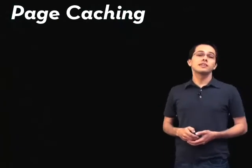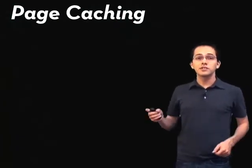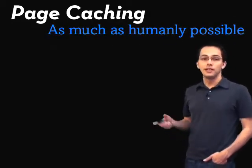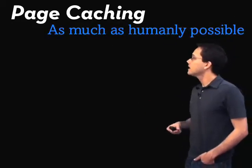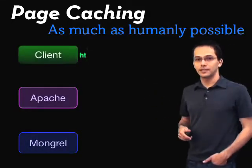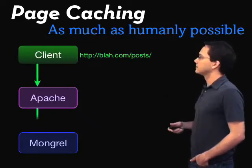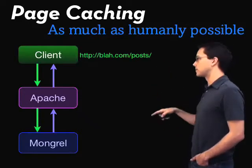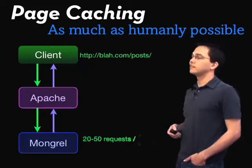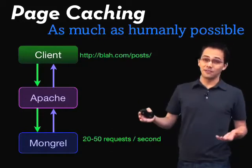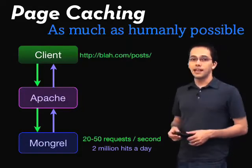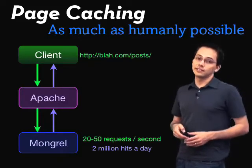Rails comes with a bunch of ways to do caching right out of the box, the first of which is page caching, which is something you want to do as much as humanly possible. The typical Rails setup, you might have something like this, where you've got a mongrel sitting behind an Apache. A client comes in, the request gets passed from Apache to the mongrel and back out to the client. With a single mongrel, you can typically handle between 20 and 50 requests per second, depending on how heavy your Rails app is. This comes out to about 2 million hits a day, which is good enough for most applications out there on the Internet.